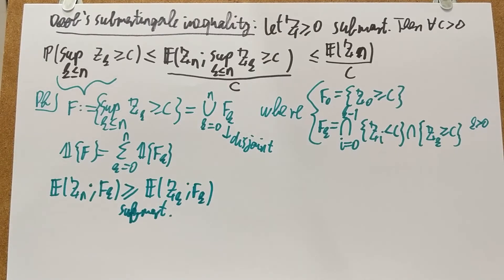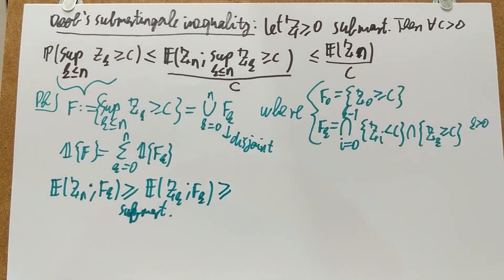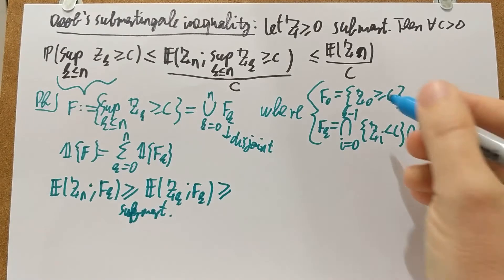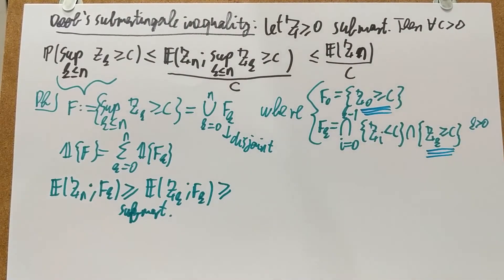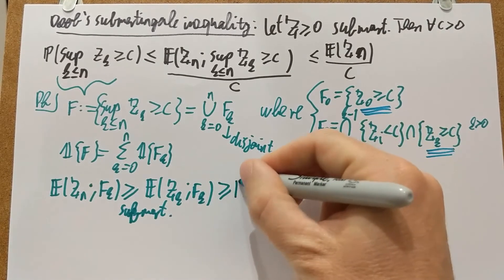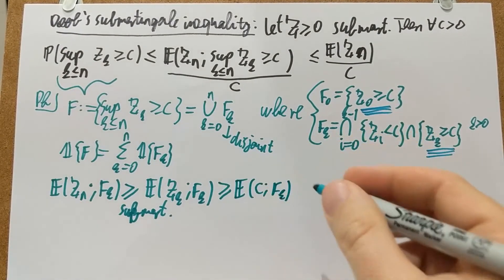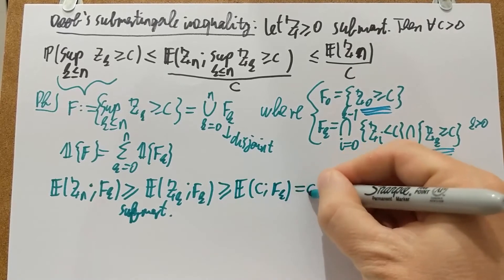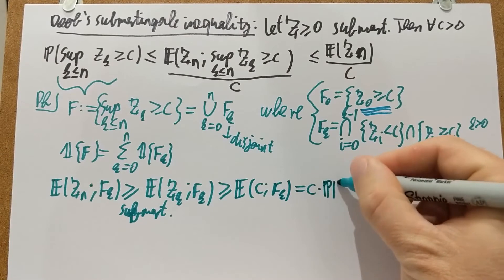And then notice that under F_K, F_K is a complicated event, but either for F_0 or for F_K, it includes the fact that Z_K is at least C. So when this indicator is 1, then we know that Z_K is at least C. And therefore, this is larger than or equal to the expectation of C on F_K. C is a constant, I can factor it out. It's not random. And the expectation of the expectation of F_K becomes the probability of the event F_K.